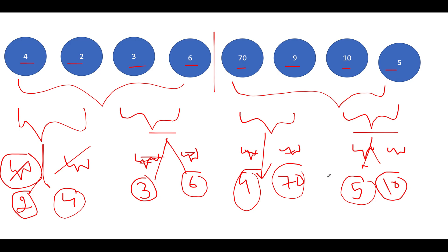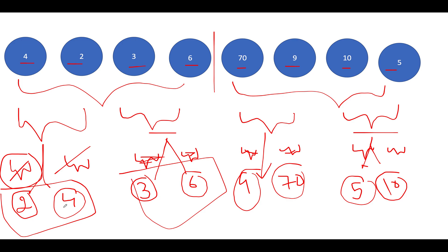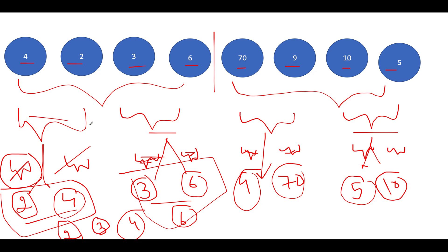Now we perform merging on the two sorted halves. The first part is [2, 4] and the second is [3, 6] — both already sorted, and we can merge them in O(n) time. The merged result is 2, 3, 4, 6, which matches our expectation. Similarly, we merge [9, 70] and [5, 10] to get 5, 9, 10, 70.